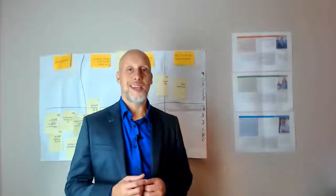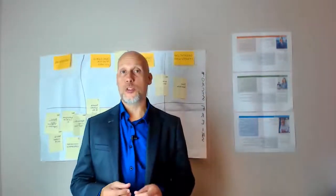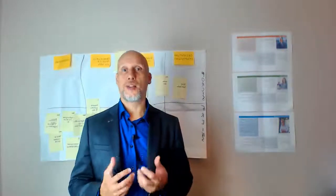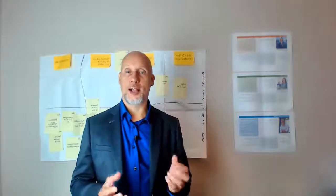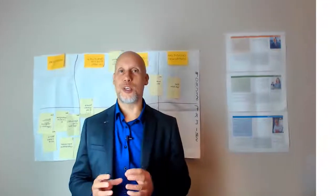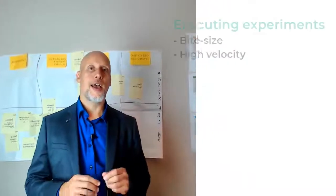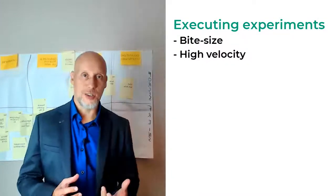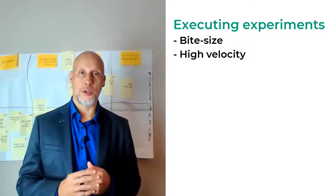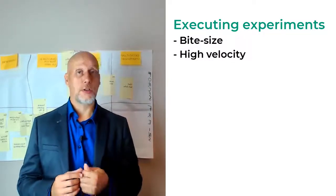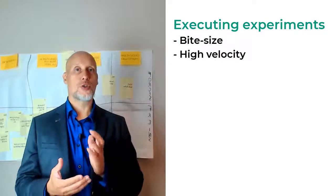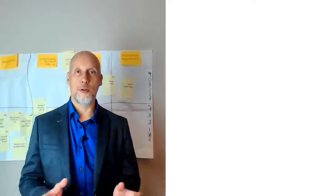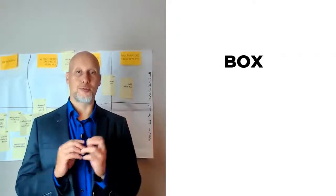We have seen that financing experiments and the way to set objectives, to design them, to assess the result is quite different from other types of initiatives like projects. The way to execute them is also quite different. And here, everything is done in terms of enforcing the bite-sized nature of experiment in terms of budget, time, people involved to enforce the high velocity of experiment. So the key word here is the box. And we have four types of box.